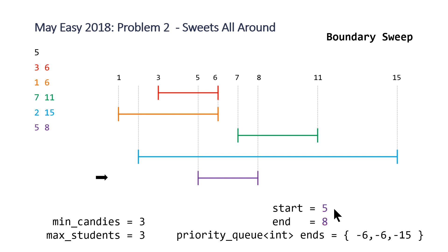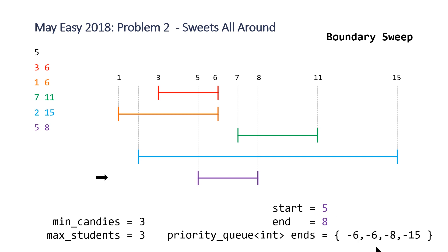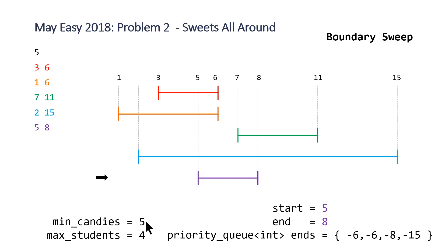Moving to the purple student with range 5 to 8, we push 8 into the priority queue. The top value is not less than 5, so we move on without popping anything. We check: is the size greater than max students? It is, so we set max students to 4 and min candies to 5. This means that if the teacher were to buy five candies, he would be able to satisfy four students: the purple, blue, orange, and red students.